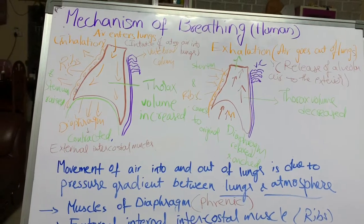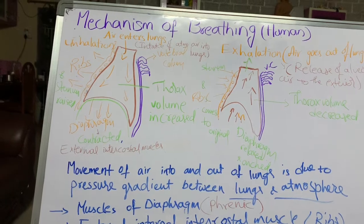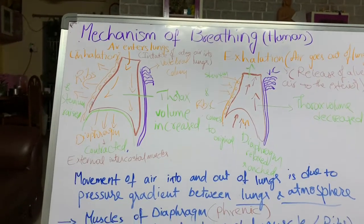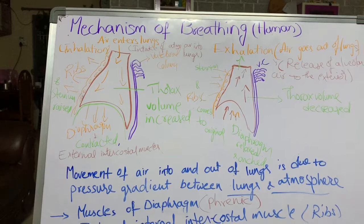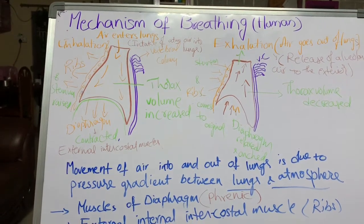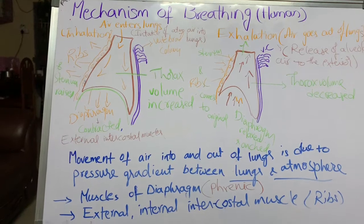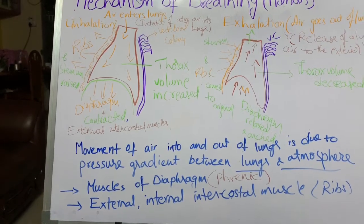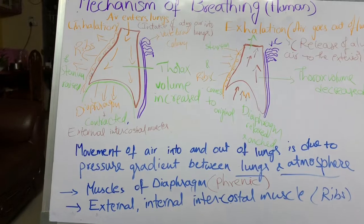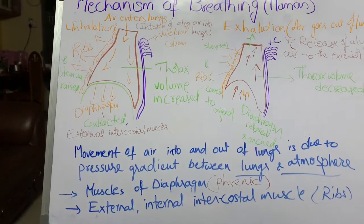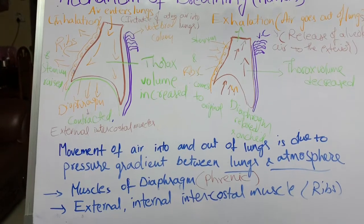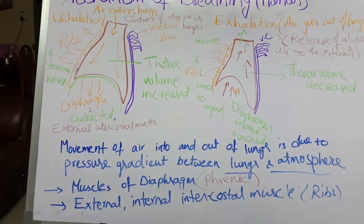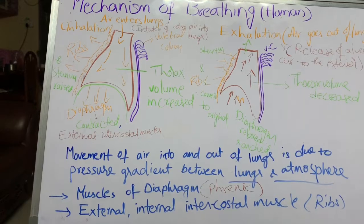The breathing process involves one physical property of gases, which is pressure. Gases move from high pressure to low pressure — this is very important to remember. Air or any gas passes from a higher pressure area to an area where pressure is low. Movement of air into and out of the lungs is due to the pressure gradient between the lungs and the atmosphere. This is the key principle involved in breathing.